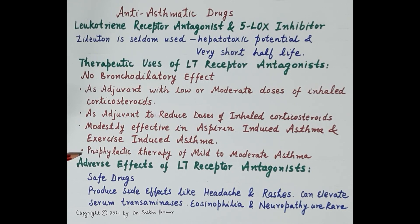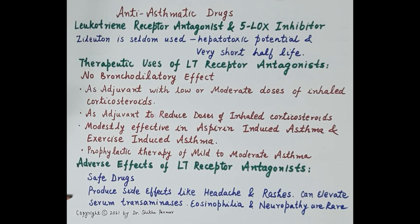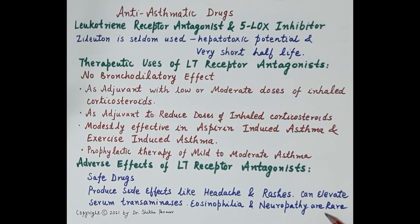These drugs are also indicated in the prophylactic therapy of mild to moderate asthma. Regarding adverse effects, leukotriene receptor antagonists are generally safe drugs; however, they produce side effects like headache and rashes. Since they are metabolized in the liver, they can elevate serum transaminases. Eosinophilia and neuropathy are also seen but are rare incidences. This concludes the pharmacology of leukotriene modifiers and their role in management of asthma.